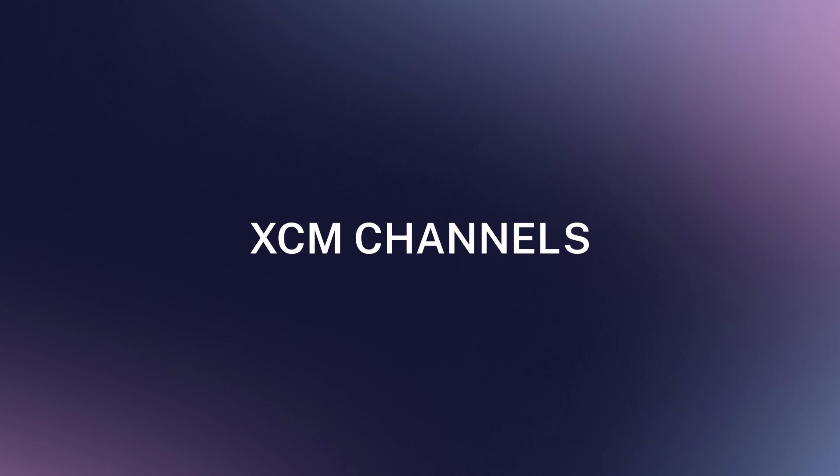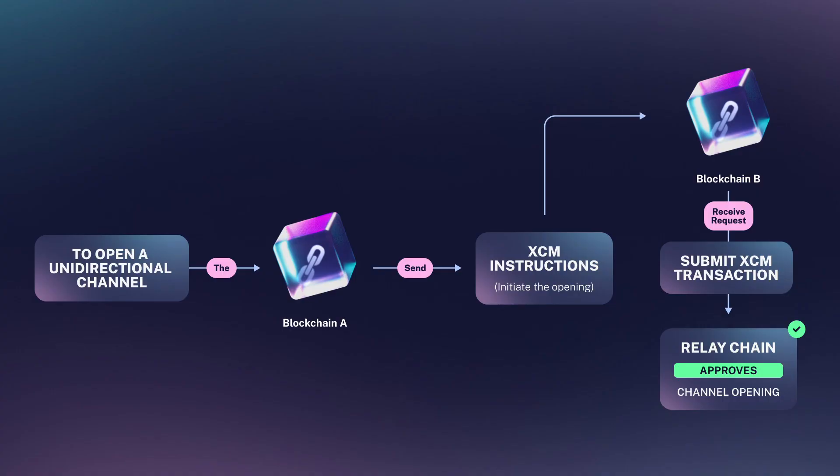XEM channels. In order for two blockchains that support XEM to be able to execute messages, they need to have open channels between them. To open a unidirectional channel, a blockchain needs to send XEM instructions that initiate the opening, and the chain that receives the request needs to submit an XEM transaction to the relay chain that approves the channel opening. Both operations need admin privileges or approval in a governance vote, and after approval on the receiving end, parachain A will be able to send messages to parachain B.